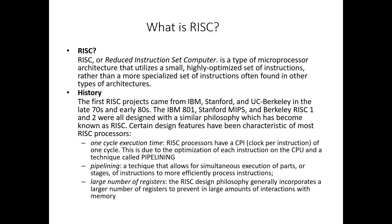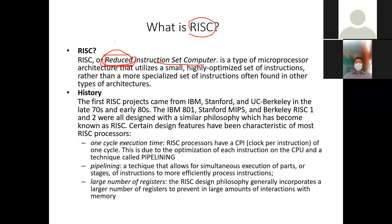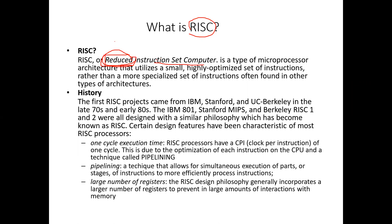RISC stands for Reduced Instruction Set Computer. The difference between RISC and CISC is that the instruction set size in RISC is smaller and simpler than CISC — that is why it is called 'reduced.' Additionally, the instruction size is fixed in RISC.